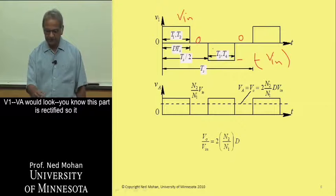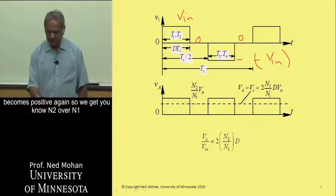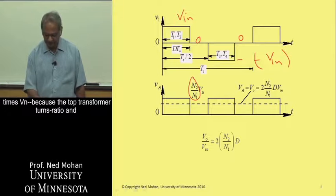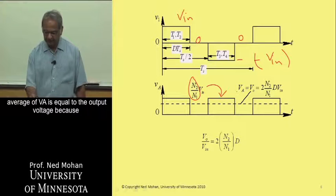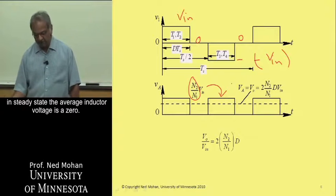So based on this V1, VA would look, this part is rectified, so it becomes positive again. So we get N2 over N1 times VN because of the transformer turns ratio, and similarly, the same quantity appears over here,